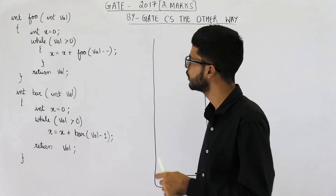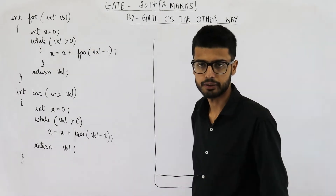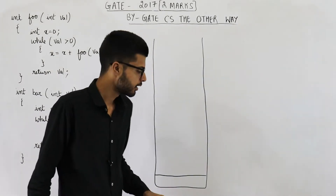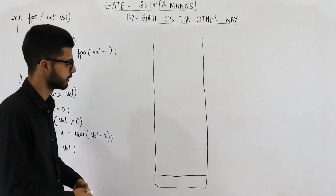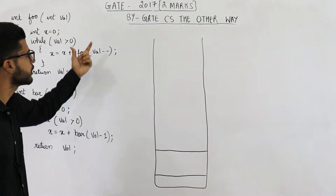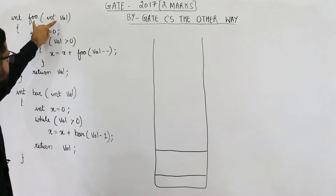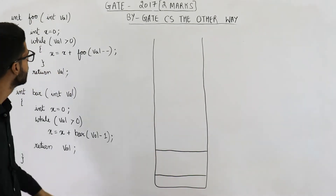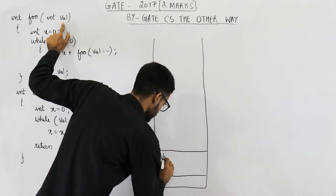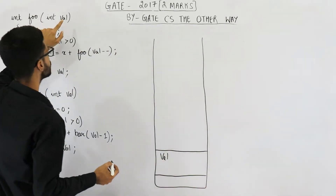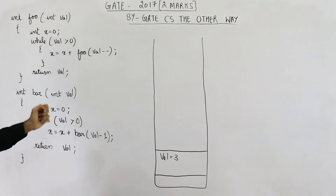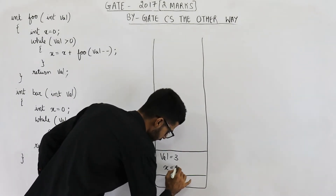I hope you have read the question by now. So let's start with this function. From the main function we are calling function foo and we are passing three as parameter. Suppose this is the activation record of main. Now because we are making a function call, one more activation record will be pushed corresponding to the new function that is called. For this function, this is the activation record. In this activation record there will be a local variable of integer type named val, and we are passing three as parameter, so this variable will get three. In the first line of this function we are also declaring one more variable named x with a value zero.